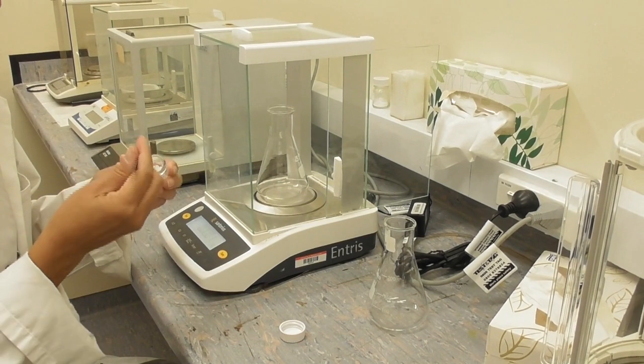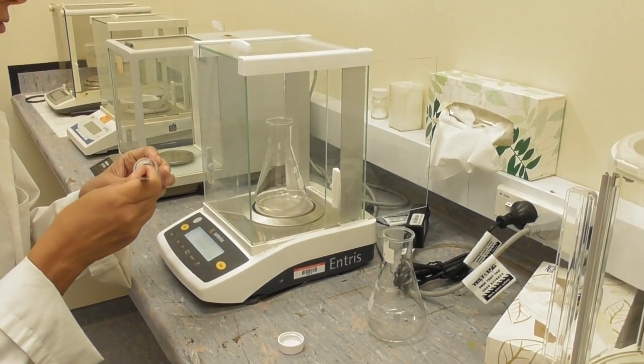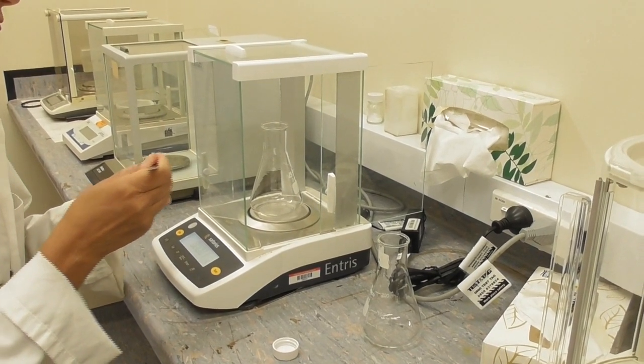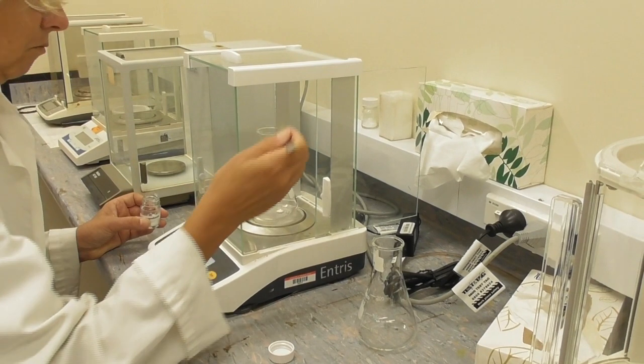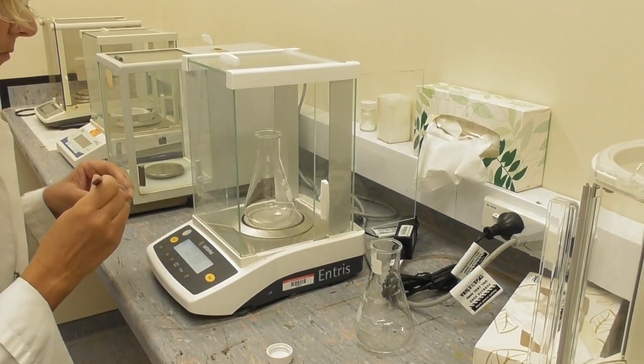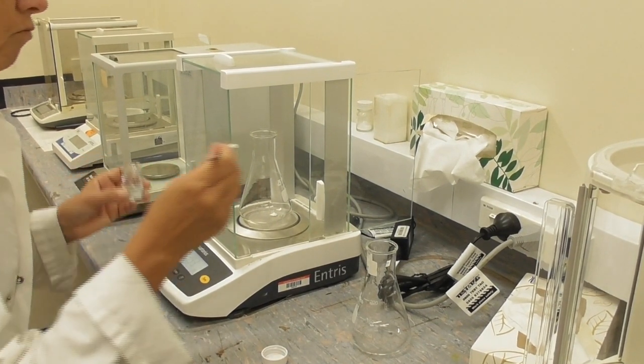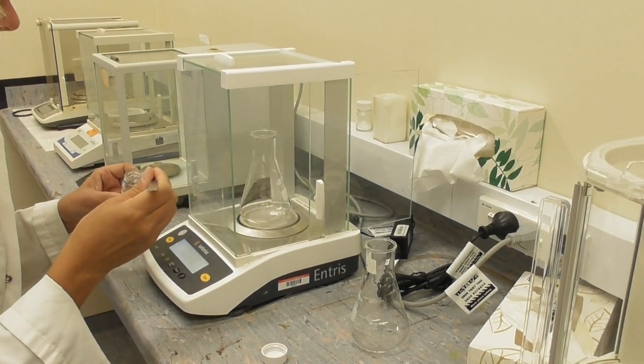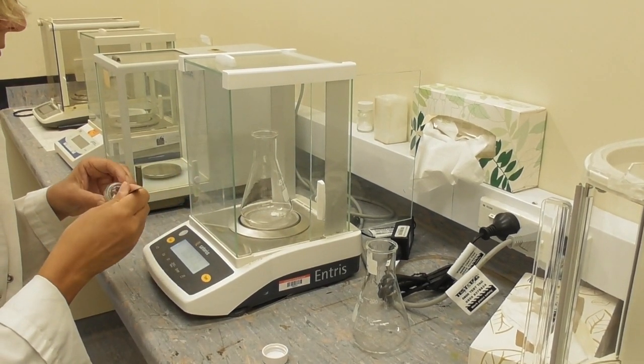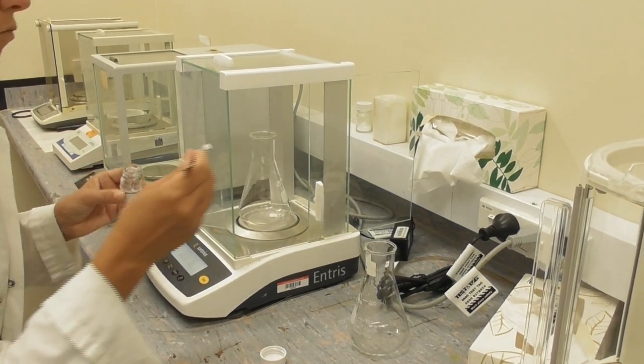I add peroxyborate into the flask. While it says approximately 0.2 grams, it doesn't really matter what it is exactly as long as I write down the mass of peroxyborate that is in my flask.